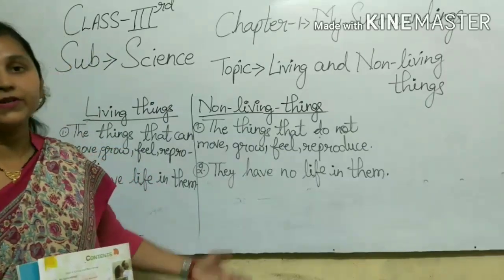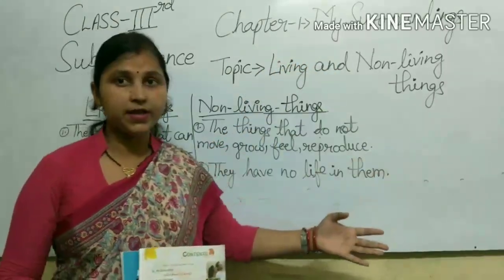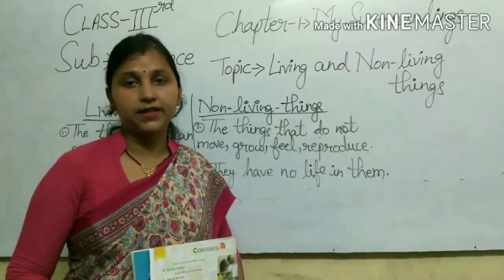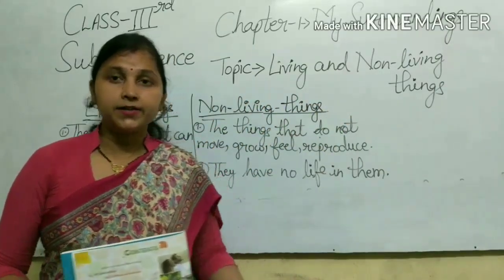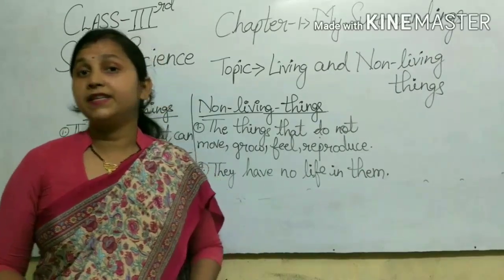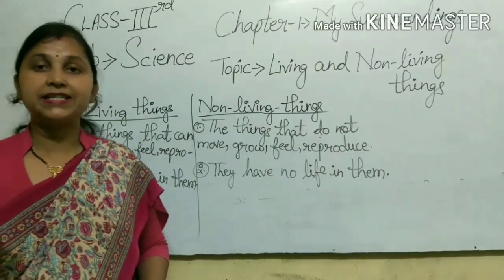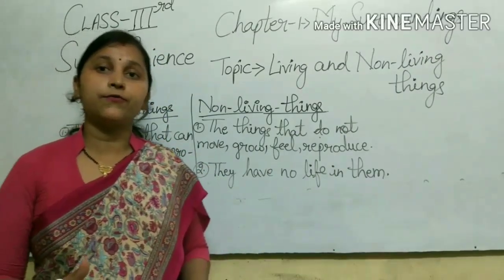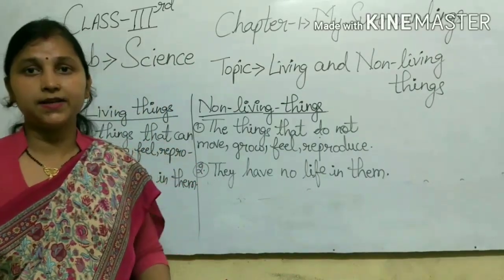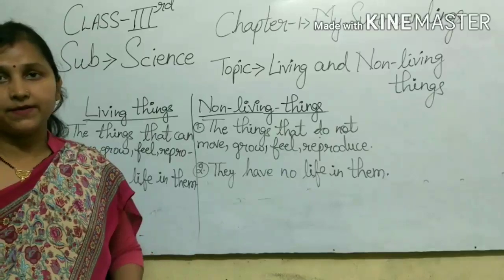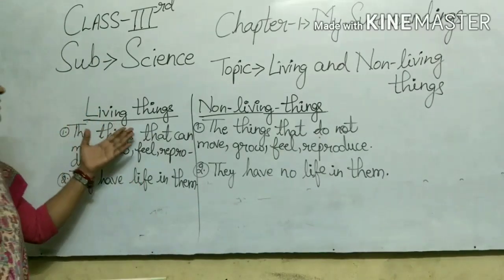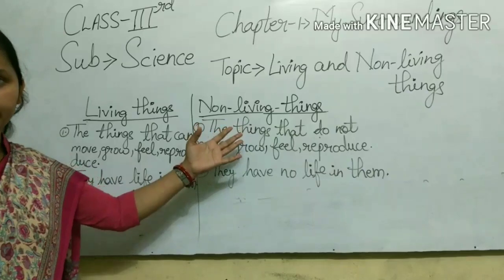So the first chapter is My Surroundings. In this we will read about living things and non-living things. As we all know that we all live in this beautiful world which is full of so many things, and we have divided them into two parts — living things and non-living things.